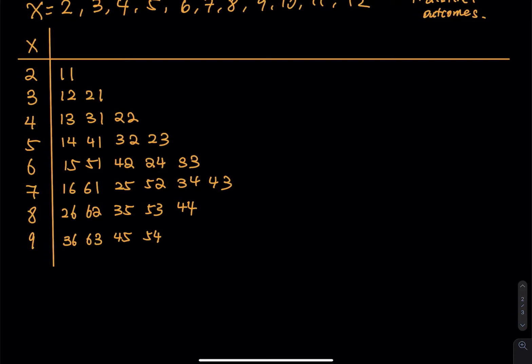For a sum of 10, can we do 1+9? No, there is no 9. So we have 4+6, 6+4, and 5+5. Sum equals 11: 5+6 and 6+5. Sum equals 12: the last one is 6+6.